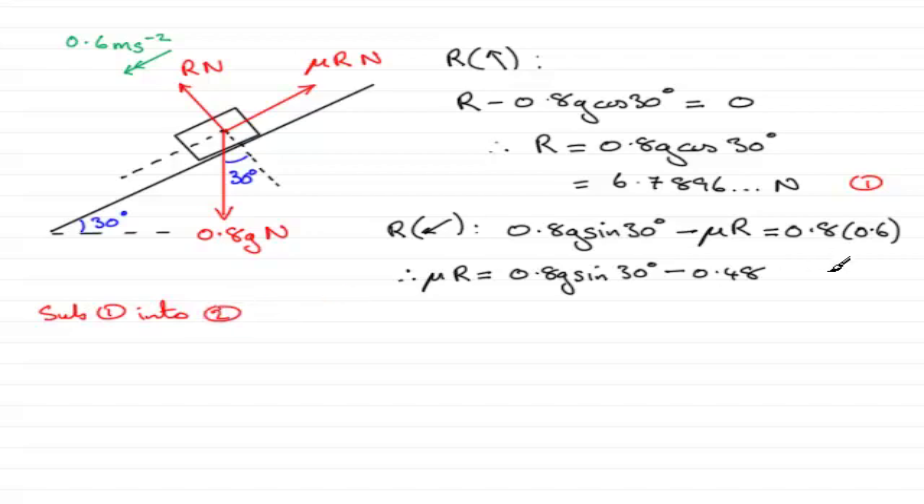So what I've got then is that μ multiplied by R, which is 6.7896 and so on, is equal to this value here, 0.8g sin 30 minus 0.48.